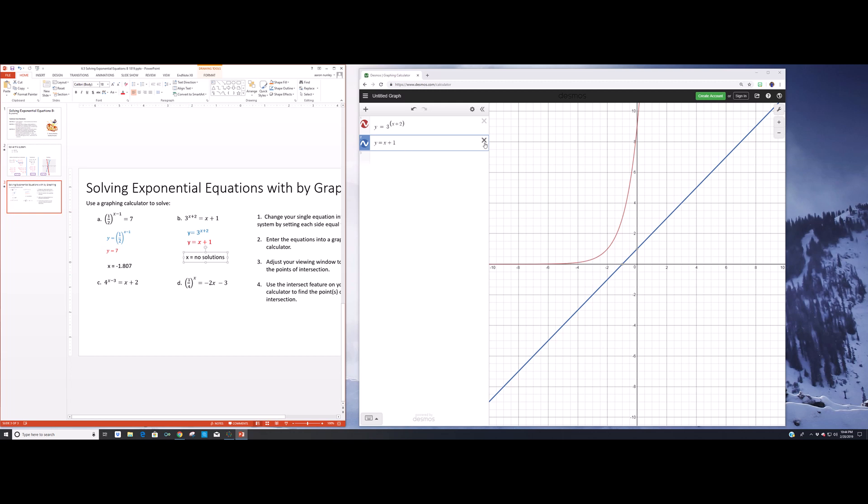I would recommend taking a second, pausing the video, and trying the next one on your own. I am going to go ahead and do it here in the video. Let's make this into y equals 4 to the x minus 3. And I'll make that blue for you, so it matches the pattern we came up with in the others. And then I'm going to take this again, and I'm going to make the second equation into y equals x plus 2. And let's stick that underneath there. And let's make it red.